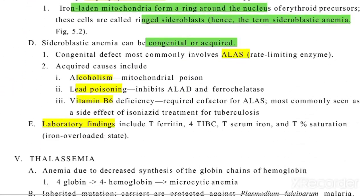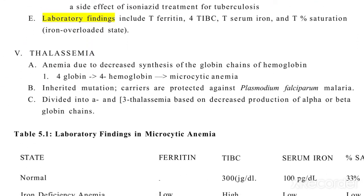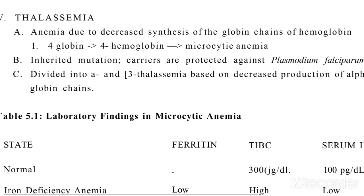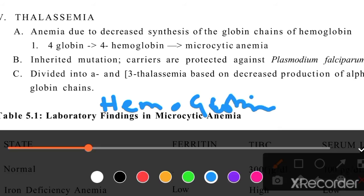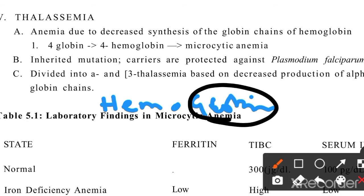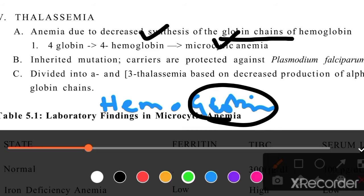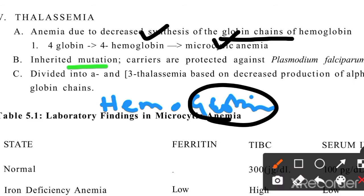Now we will discuss thalassemia. This is the fourth classification of anemia. Hemoglobin is made up of heme and globin chains. In thalassemia, there is a problem with the globin chains. If globin chains are not made properly, hemoglobin cannot be formed and the patient gets anemia. These are inherited mutations affecting the globin chain genes.